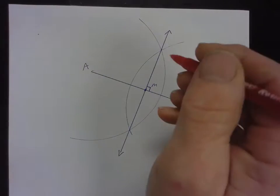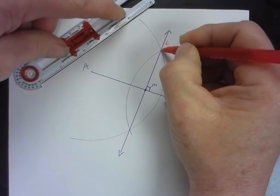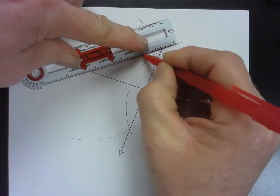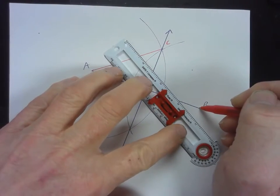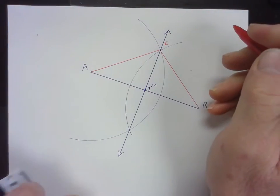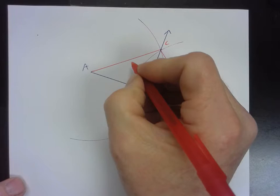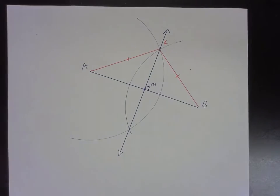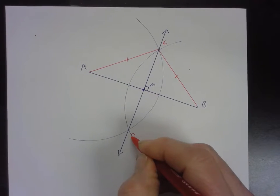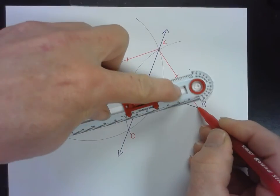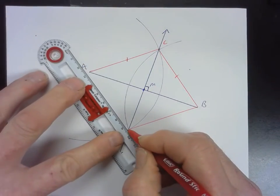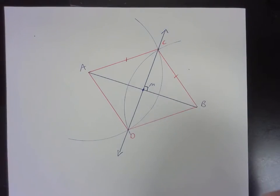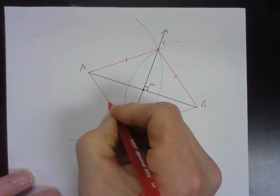Let me put a point C up here. Tell me about segment AC and segment BC. Yeah, they're congruent — we made them that way by making the arc the same from both sides. Now let's put a point D down here. Tell me about BD and AD — are they congruent? Yeah, we made them that way too.